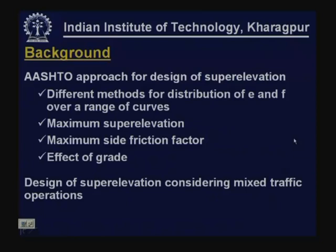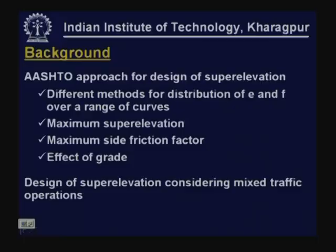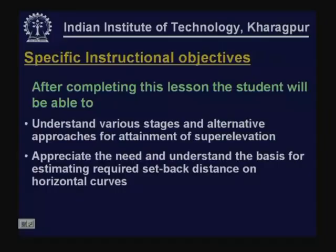Alignment part 3. In the last lesson, we discussed the AASHTO approach for design of super elevation. In particular, we talked about different methods for distribution of E and F over a range of curves. We also discussed the maximum super elevation rates prescribed by AASHTO under different conditions, and maximum site friction factors depending on the speed level, and the effect of grade on super elevation design.